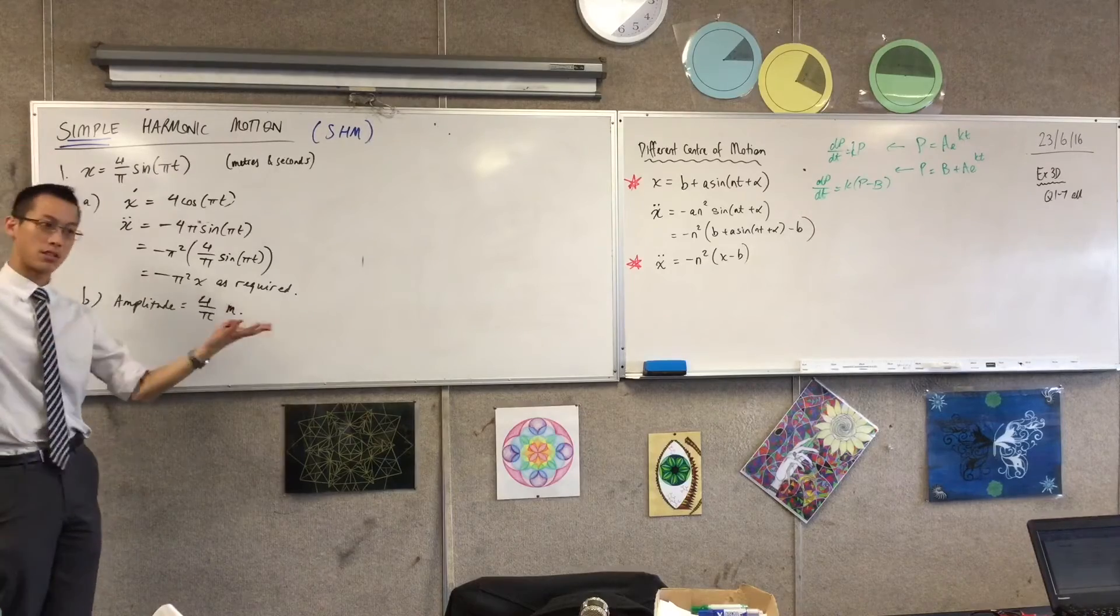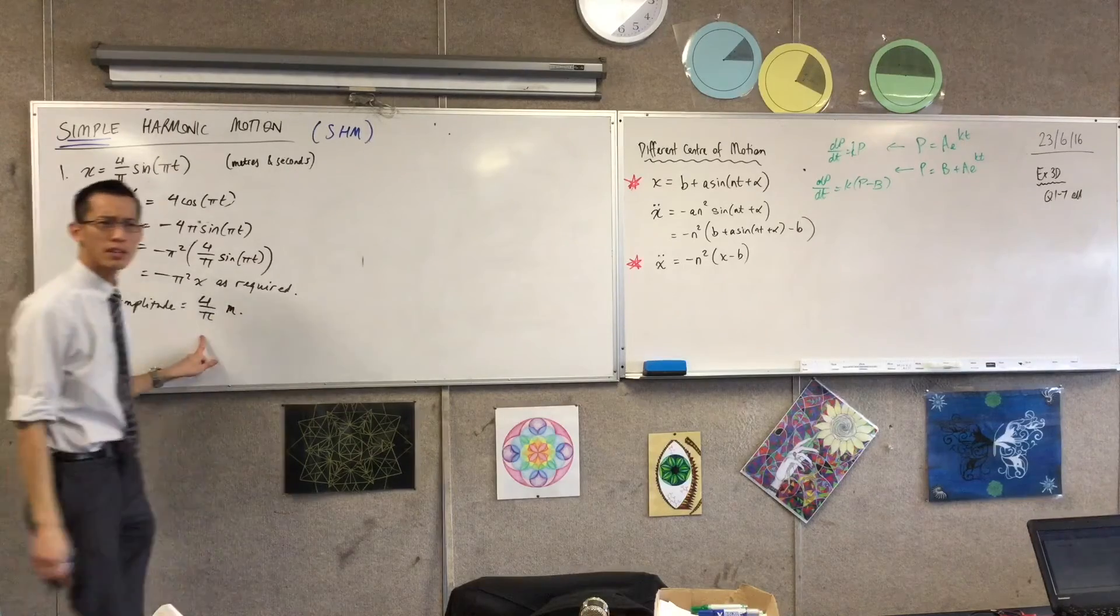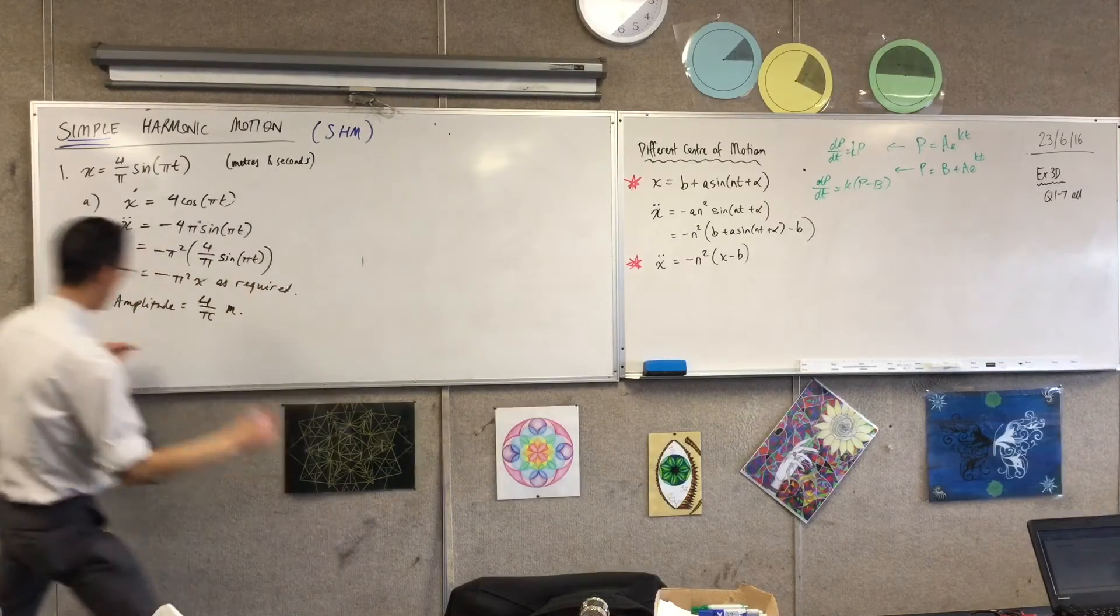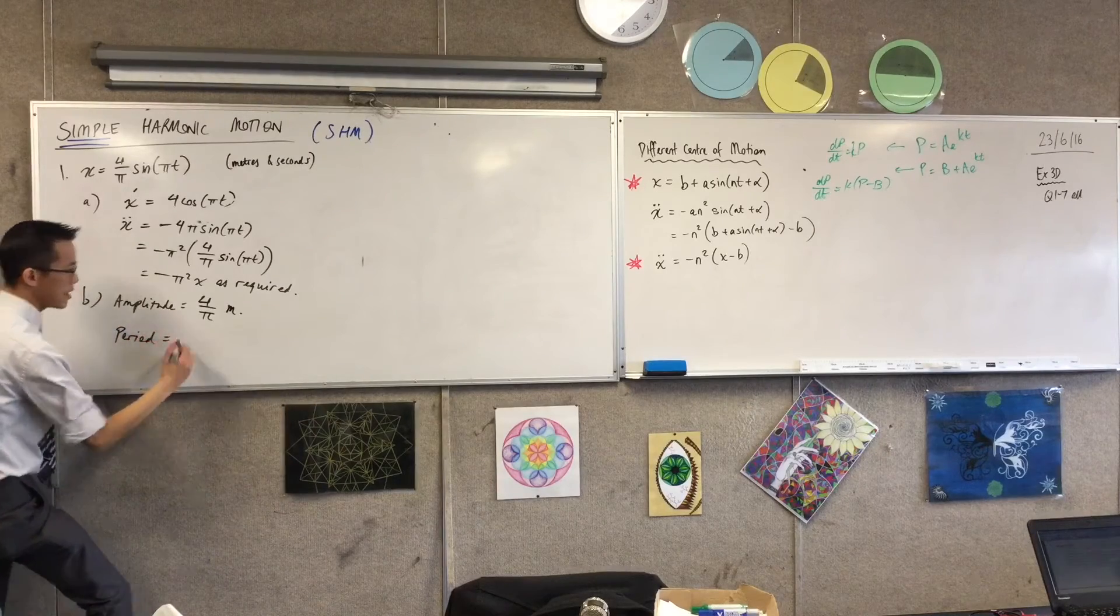What would you say if you were asked for the extremes of motion? You'd say four on pi and negative four on pi, they're the actual two extremes, because it's two of them. What were the other two things they asked for? Period and central motion.